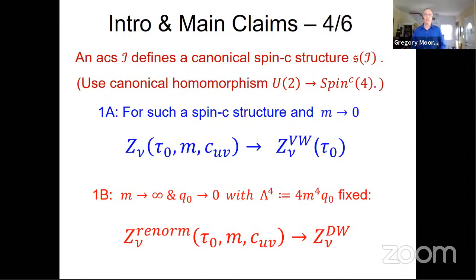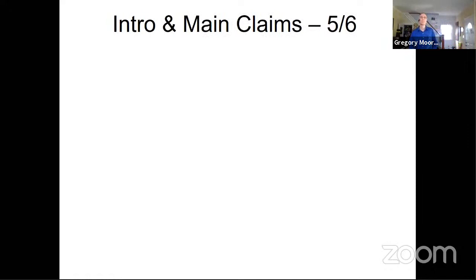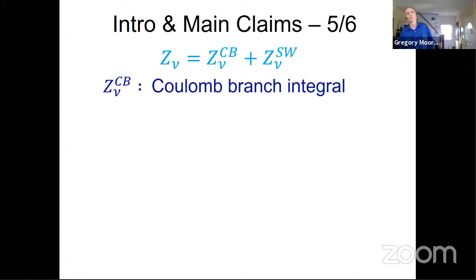The next set of claims has to do with the Coulomb branch integral. This function can be written as a sum of two terms: one is the Coulomb branch integral, the other is the Seiberg-Witten contributions. The Coulomb branch integral is an integral over the Coulomb branch, but writing a single-valued measure when you include this background spin-C structure turns out to be tricky — it requires non-holomorphic interactions.